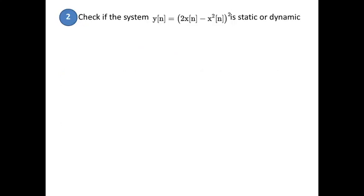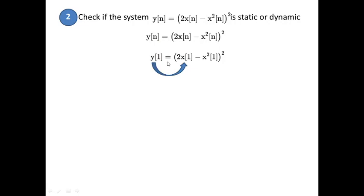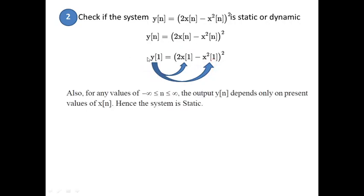Check if the system is static or dynamic. Taking y(n) = 2x(n): y(1) = 2·x(1), y(2) = 2·x(2) — at any time, the output depends only on the present value of the input. Hence the system is static, or a system without memory.